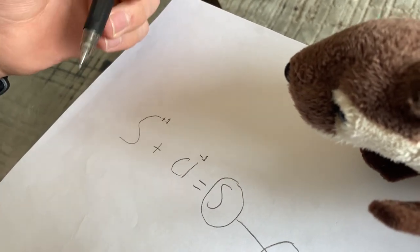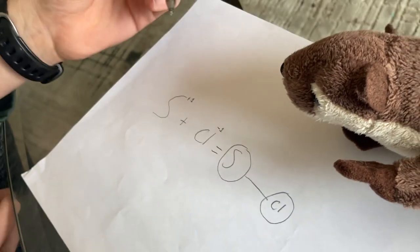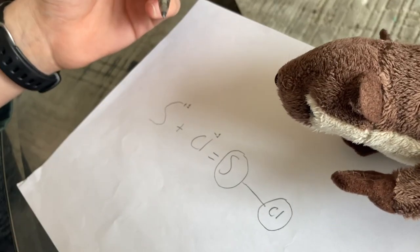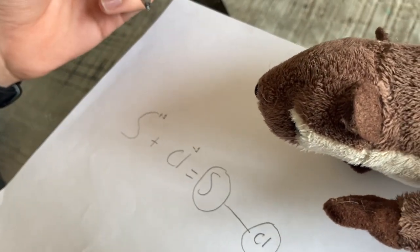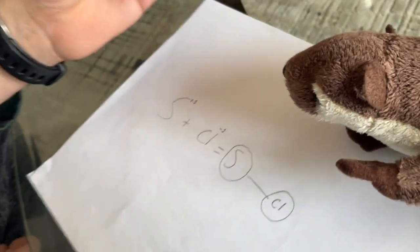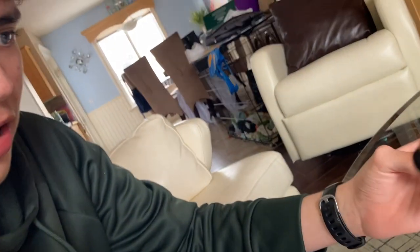With ionic compounds, like salt, we give it a special name. For salt, it is sodium chloride. The chlorine part of the atom becomes chloride to show that it is an ionic compound. That's pretty cool. Thanks for teaching me. Now let's go eat some salty fries. Yay!